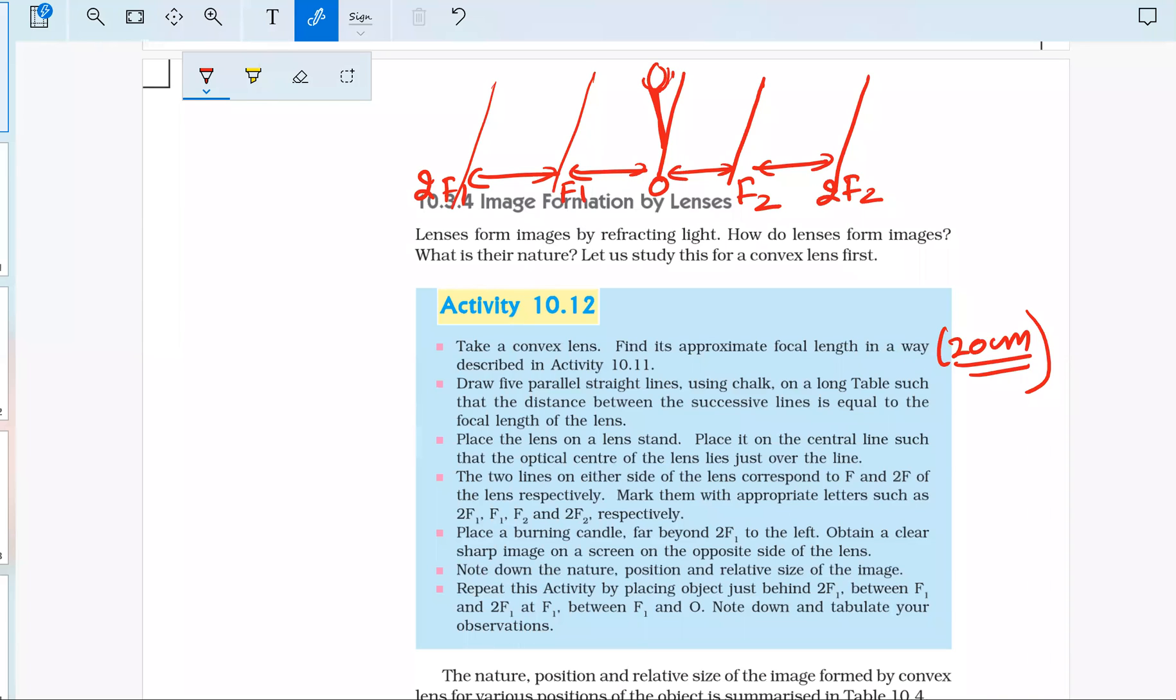If you are doing this on a table at the other corner of the room, you can just place a candle. That will be the case when the object is placed at infinity. Infinity means the distance of the object with respect to focal length should be very large. The object can be placed at infinity, beyond 2F1, at 2F1, or at F1.